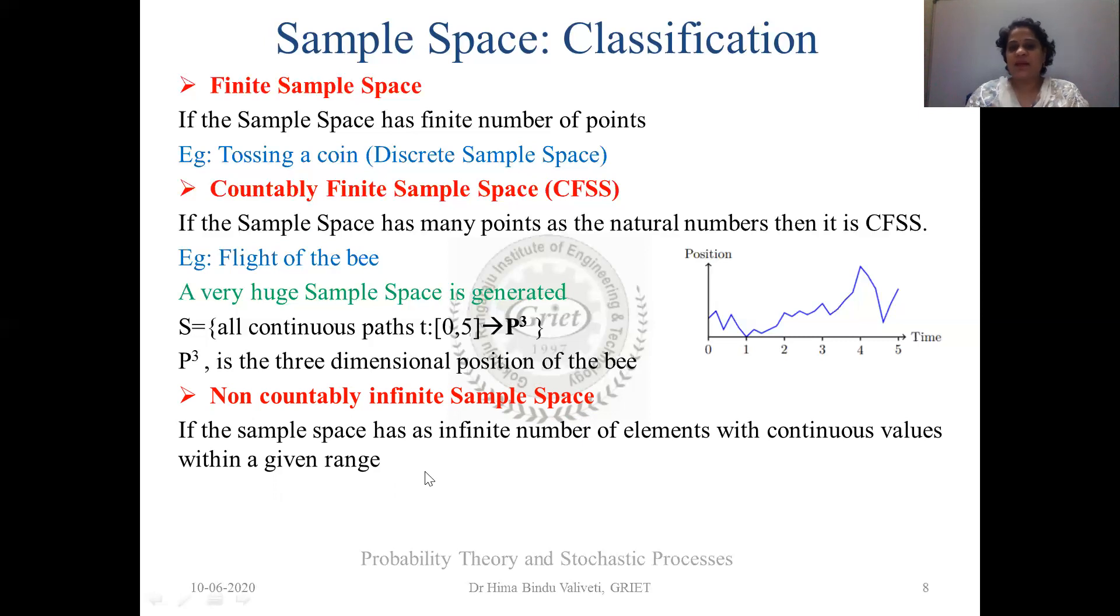Now non-countably infinite sample space. This is the third classification of sample spaces. Now as the name itself implies, if the sample space has infinite number of elements with continuous values within a given range. For example, you're waiting for a bus and we know if you have the bus for a 24 hour service. You start, you come, if you miss the six o'clock bus, you have another bus at 6.15. If you miss that, you have a bus at 6.30, so on and so forth. So if you have a 24 hour service, the number of outcomes that a sample space can have is from 0 to infinity. So this is non-countably infinite sample space where it is continuous in nature. This example in particular, where a bus has 24 hour service and it runs 365 days a year. So this is the sample space set for an example and these are the classifications of sample space.